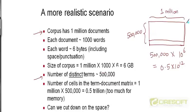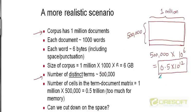If you want to store a matrix with half a trillion cells in memory in order to work with it, how much memory would you require? Each cell contains either a 0 or 1. If we assume we can store each cell in one byte, we need 0.5 times 10 to the power 12 bytes, which turns out to be 500 gigabytes. No computer today — at least not the PCs you find in the market — is going to have a RAM of 500 gigabytes.